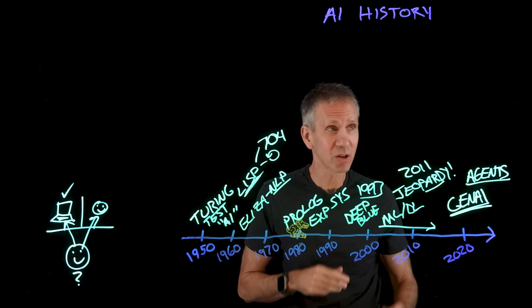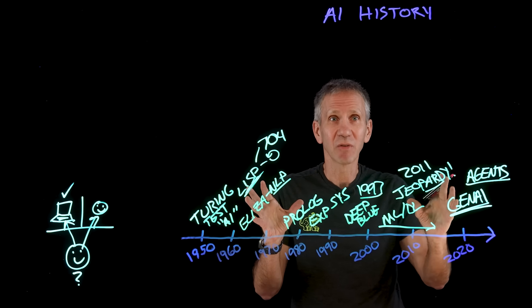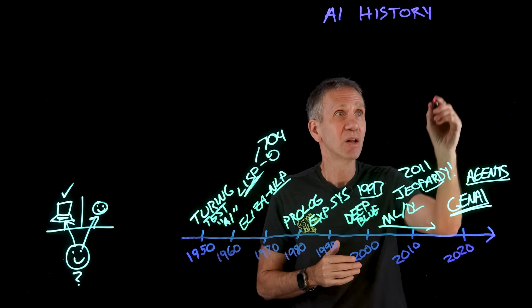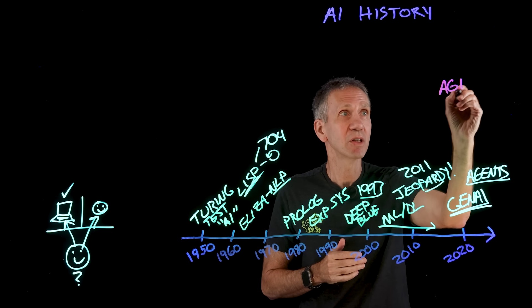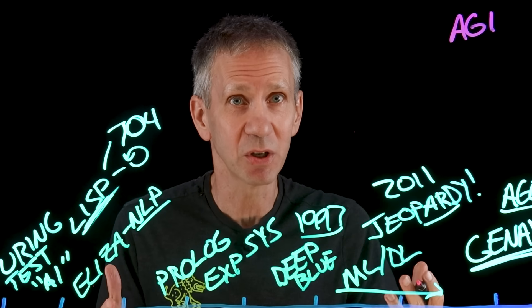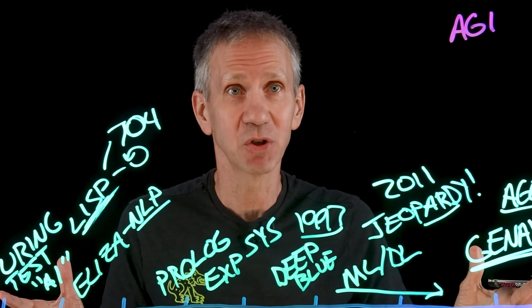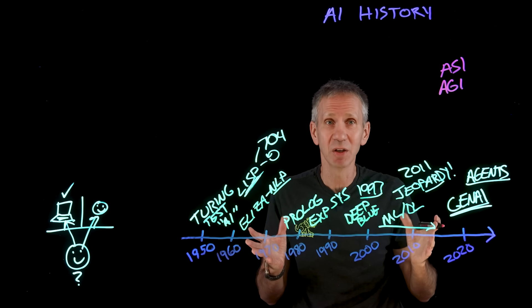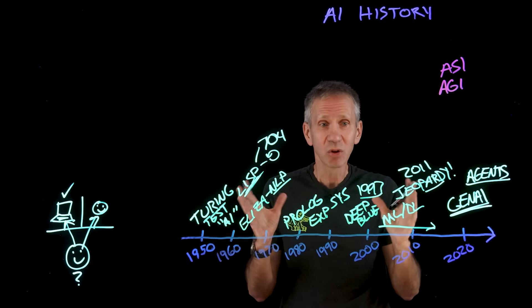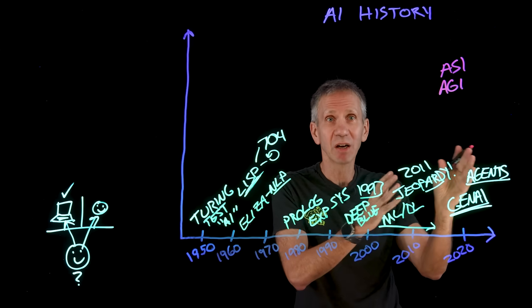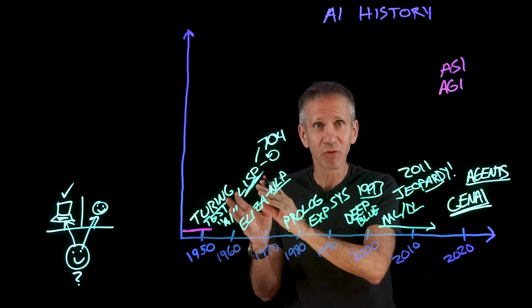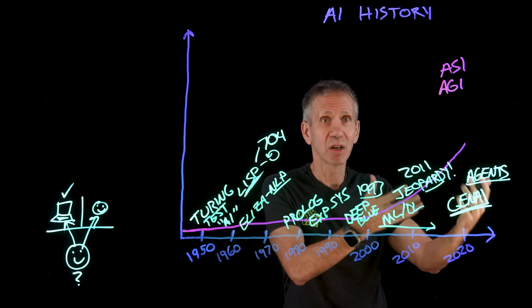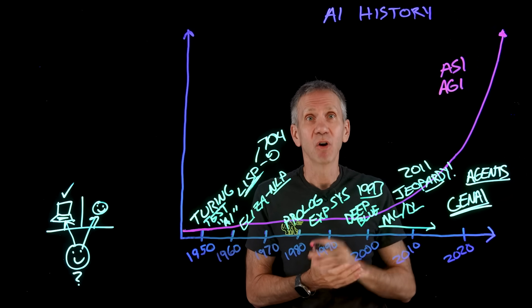And now where does the future head for us? Well, the short version is, if all of this is a sort of artificial narrow intelligence, where the intelligence is specific in particular areas, things that it can do, the next thing to be would be artificial general intelligence, where we have something that is as smart or smarter than a person in essentially every area that we could imagine. And then the next area would be artificial super intelligence, where we have something that far exceeds human capabilities in terms of intelligence across a wide variety of things.